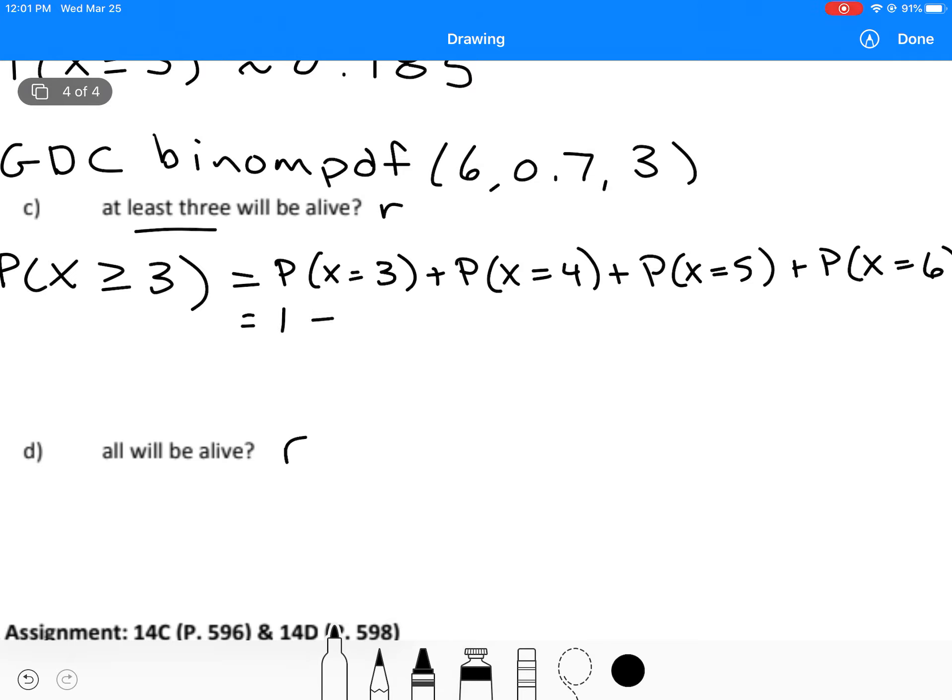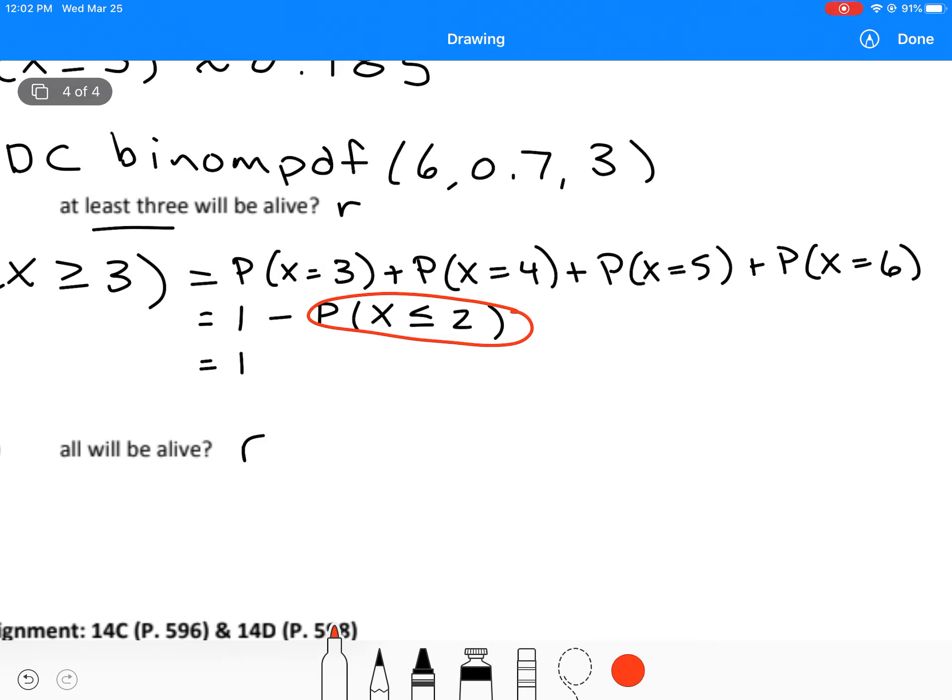The first thing that I can say is that the probability that X is greater than or equal to 3 is 1 minus the probability that X is less than or equal to 2. We can't have a success in between 2 and 3, right? So when I add up 3, 4, 5, 6, I'm excluding 0, 1, and 2. Now this one, the probability that X is less than or equal to 2, I can actually calculate using the function binomial CDF.